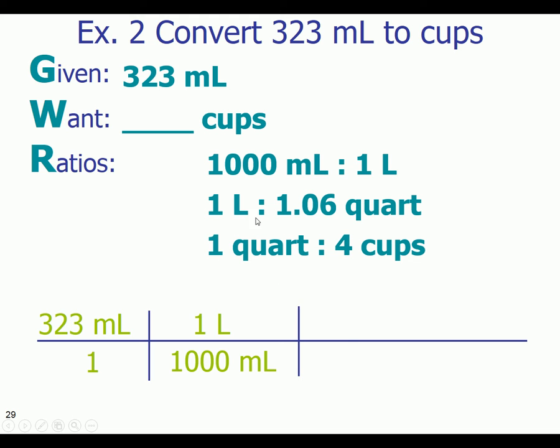Then I can take this conversion, the 1 liter, and I'm going to put it diagonal. Because remember, I want the units to be the same diagonally. So 1 liter goes in the bottom. 1.06 quarts goes in the top.